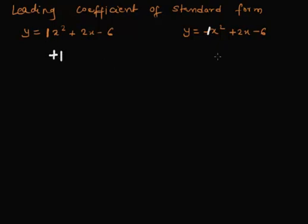Here it's plus 1, here it's minus 1. These are the leading coefficients of the given quadratic function. This is the value of a here, this is the value of a here.